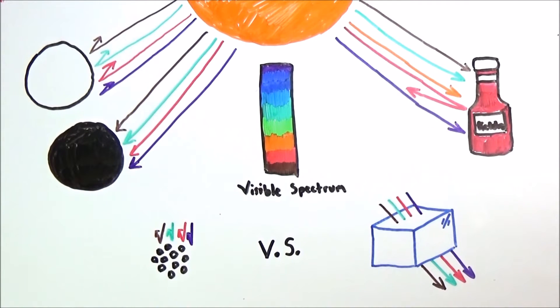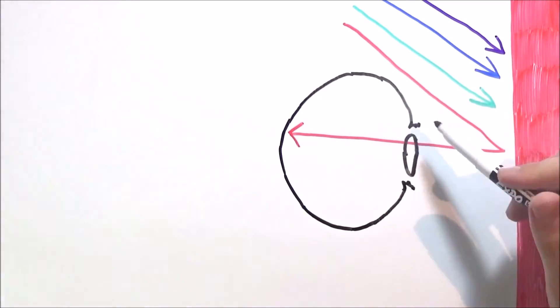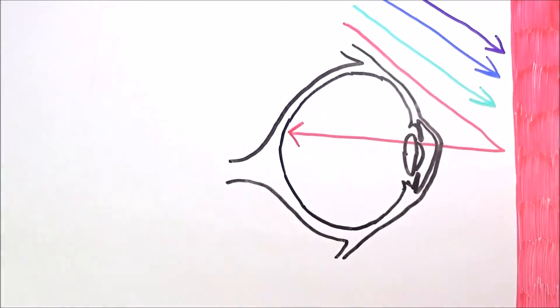Thus, whatever object light hits absorbs some colors and reflects the rest. So whatever your eyes are staring at see the reflected colors. When light hits a red object, for instance, it absorbs all colors except for red, which it reflects. The red photons go through your eyes and hit your retinas, which contain rod and cone cells.